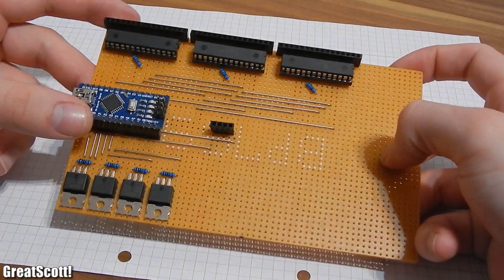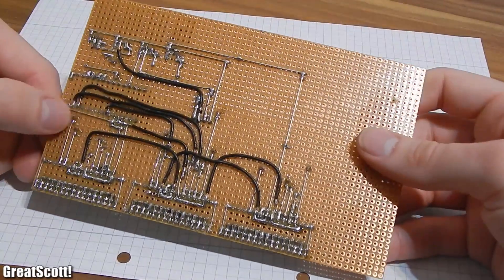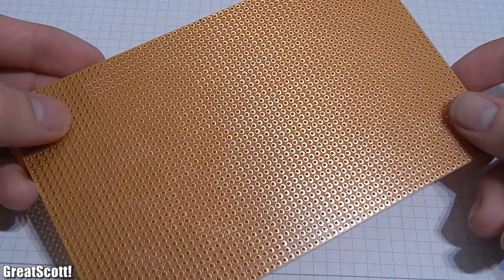Now we need to build the main circuit. Let's check the parts first. One PCB with copper dots.